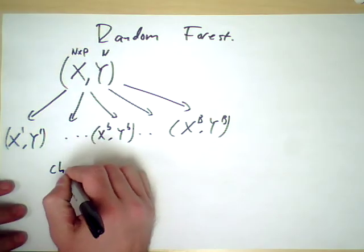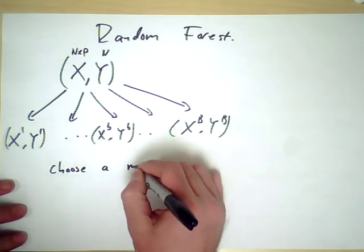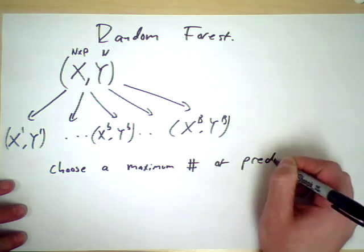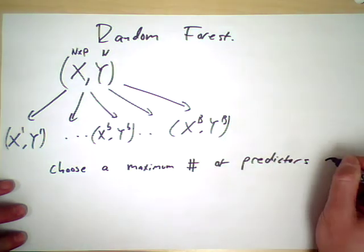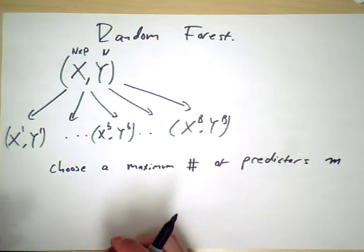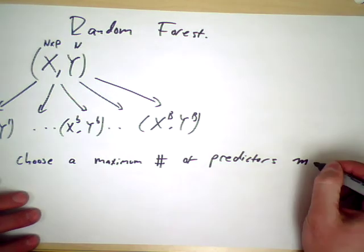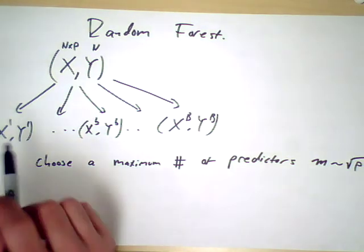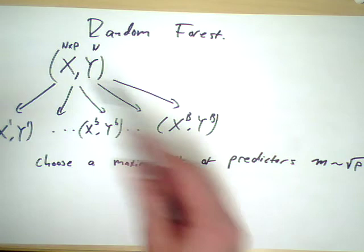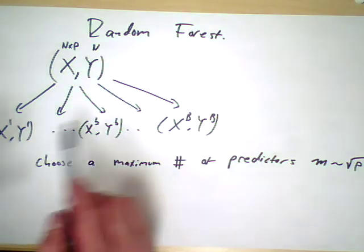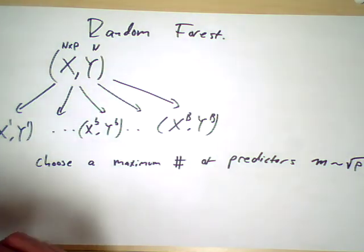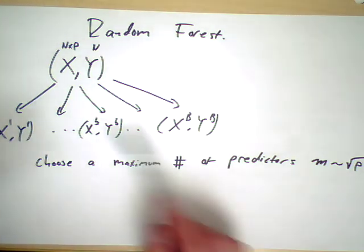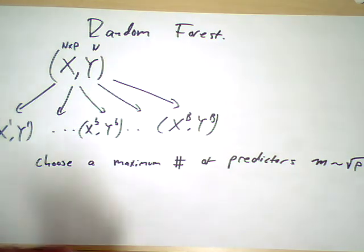Let's choose a certain number of predictors that they're allowed to use. So suppose that X involves p predictors, this is an n by p array, and this is responses of length n, one for each input point. Let's choose a maximum number of predictors, let's call that m. Experience suggests that you want m to be approximately square root of p when you're doing this bagging procedure, especially if you're sampling from it B times into roughly equal size bootstrap sub-samples.